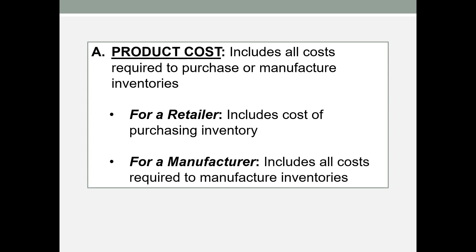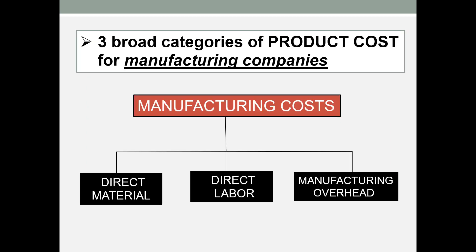For a manufacturer, this would include any cost required to manufacture that desk — so that would be wood, someone to assemble the wood, a place for this work to take place, and some equipment and tools like saws. When we think about a manufacturer, there are three broad categories of product costs: direct material, direct labor, and manufacturing overhead.